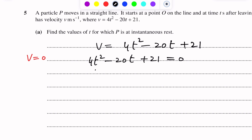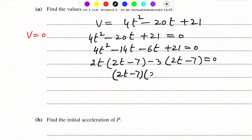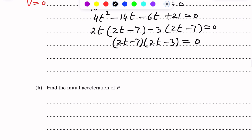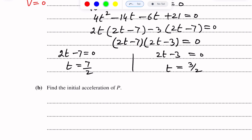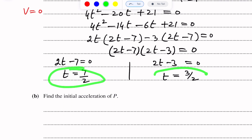Factorizing: 4t² − 14t − 6t + 21 = 0. Taking 2t common: 2t(2t − 7) − 3(2t − 7) = 0, giving (2t − 7)(2t − 3) = 0. From here, 2t − 7 = 0 gives t = 7/2, and 2t − 3 = 0 gives t = 3/2. So the values of t when the speed is zero are t = 3/2 and t = 7/2.